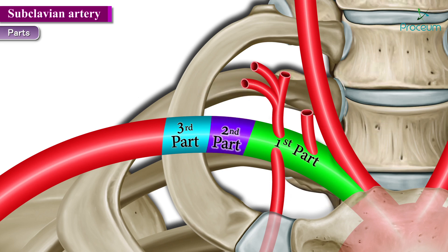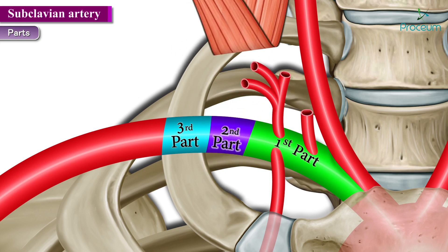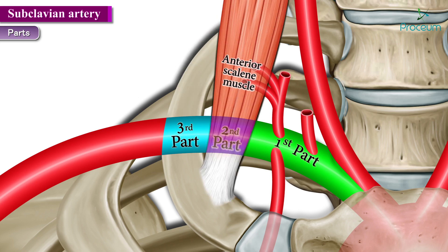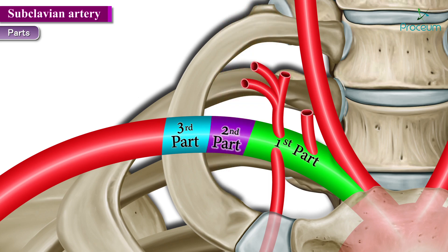The second part of the subclavian artery lies exactly posterior to the anterior scalene muscle. With the muscle removed, you can visualize this second part clearly. This part of the artery gives rise to the costocervical trunk as it courses upwards.